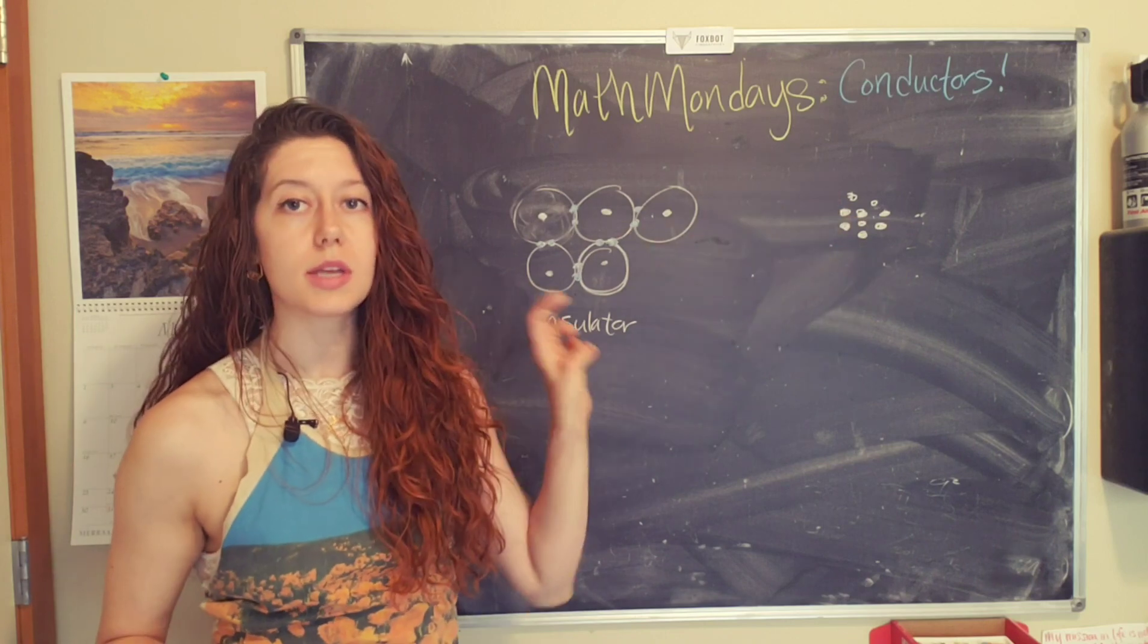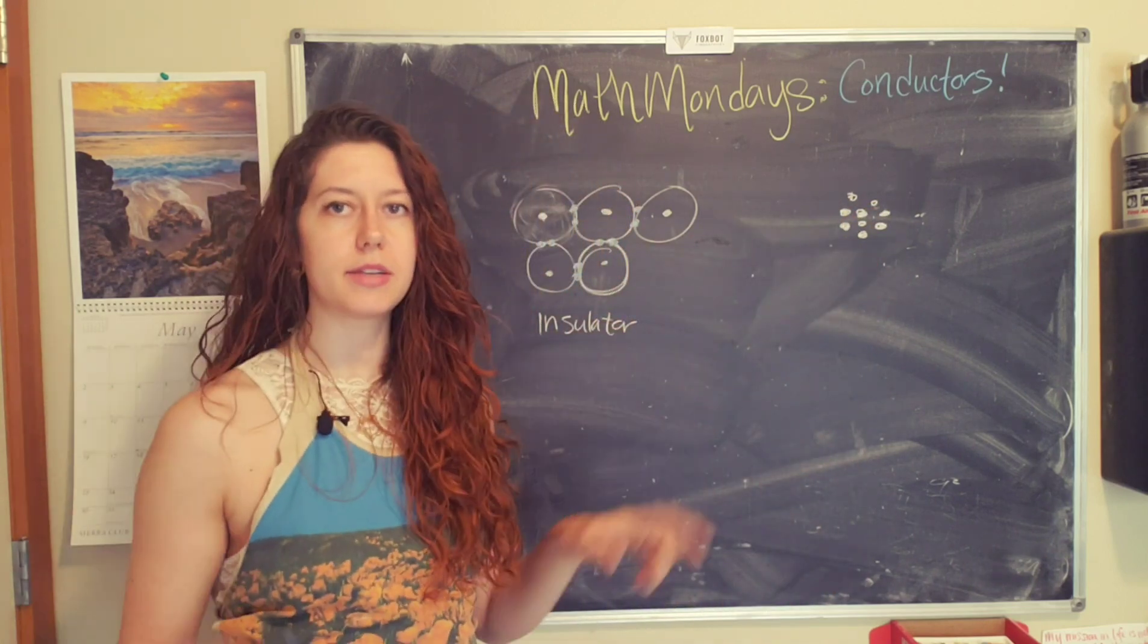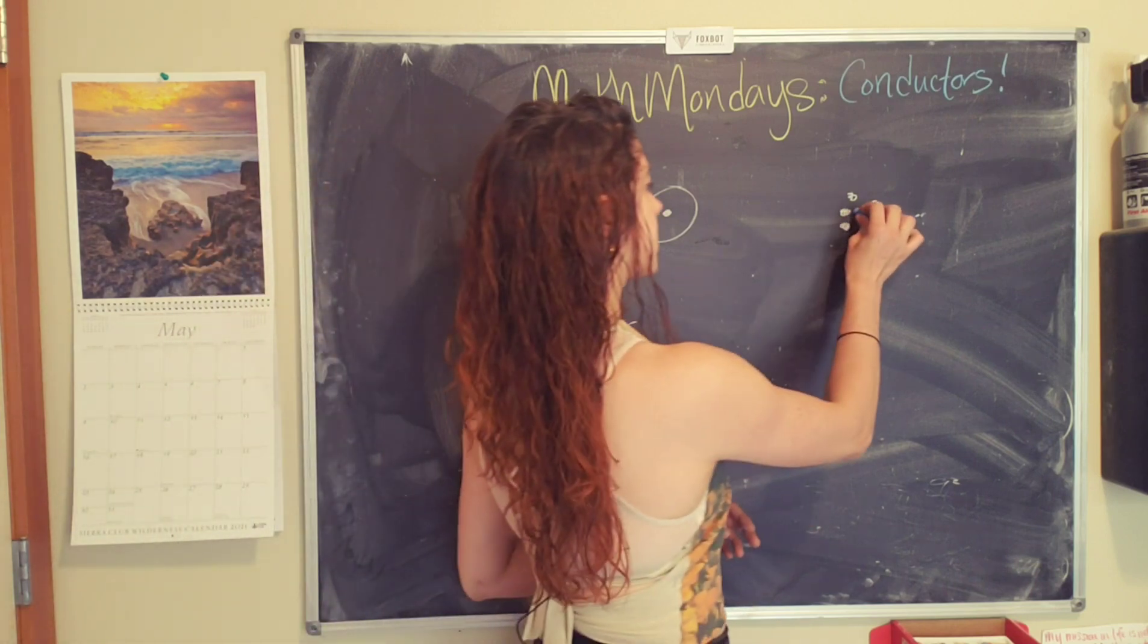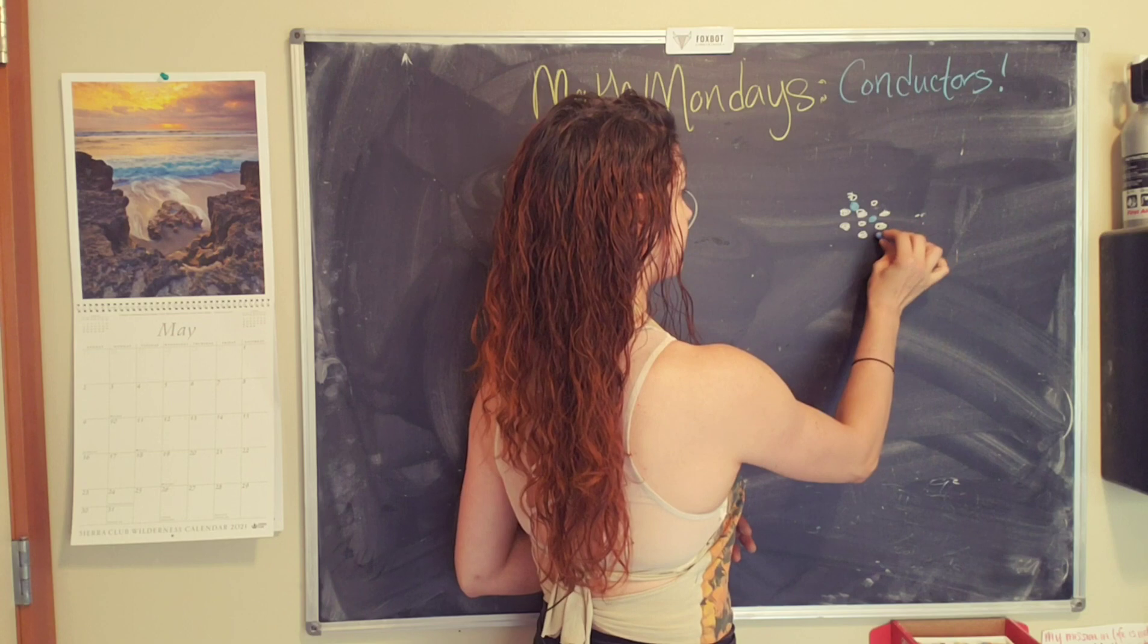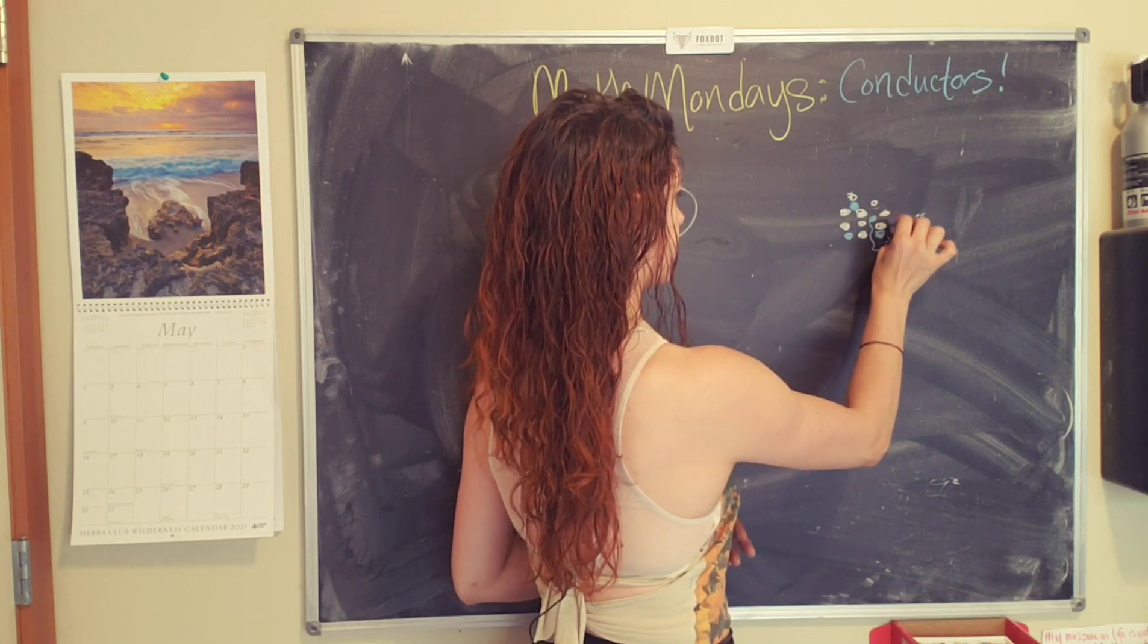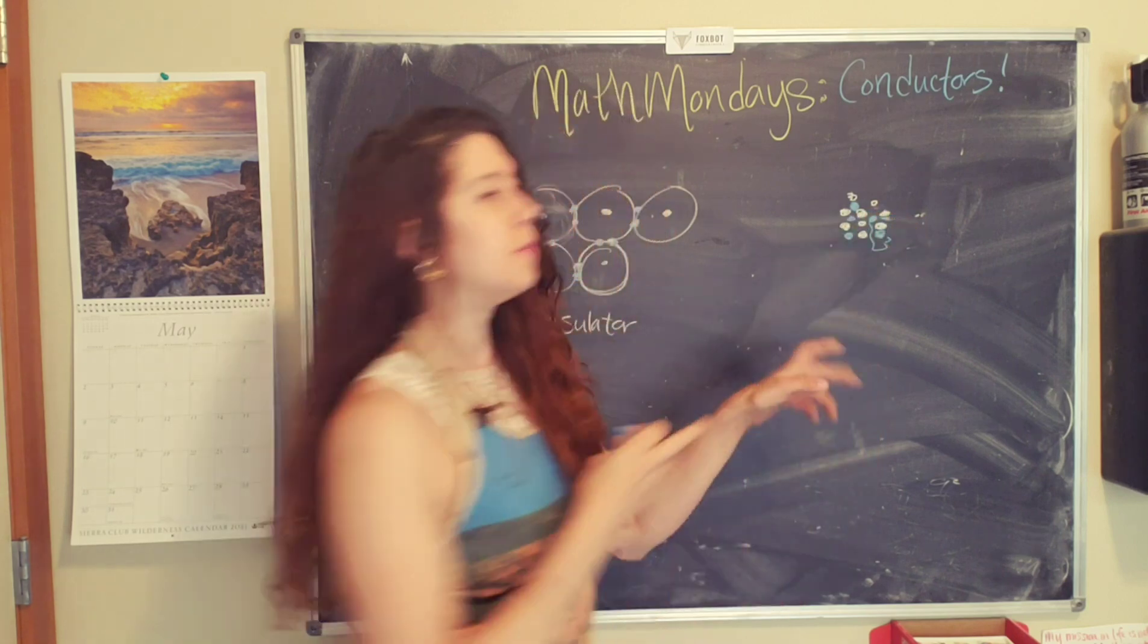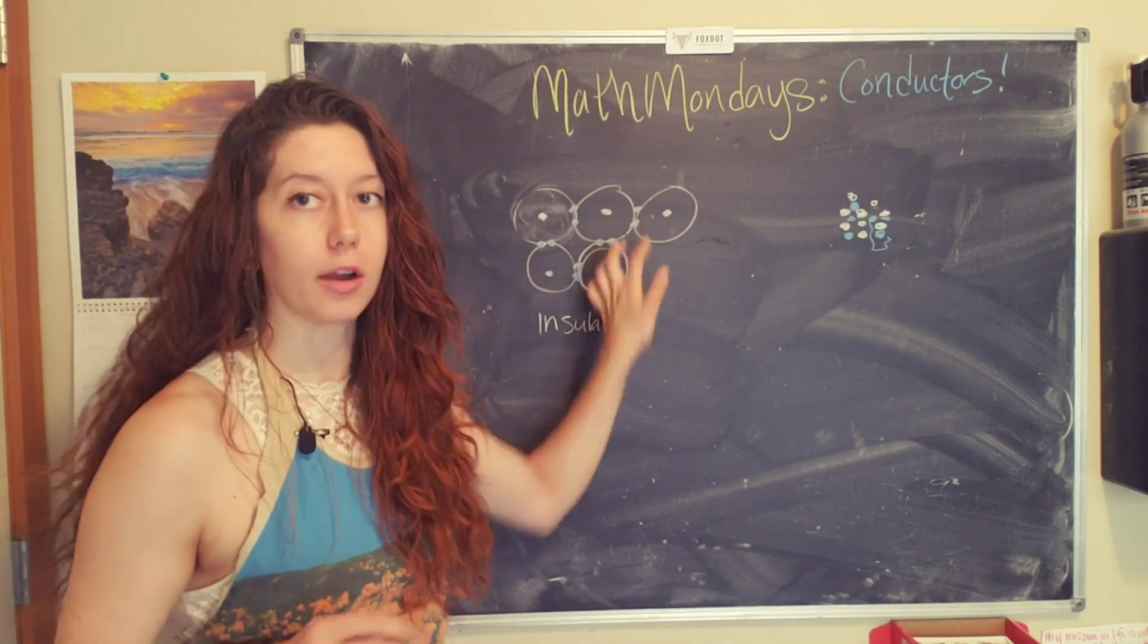But all of these atoms are basically like kind of set with their electrons. And so they have free electrons that are able to kind of just move about in between the nuclei. They're not shared like they are in an insulator.